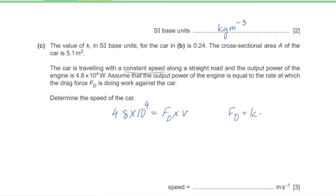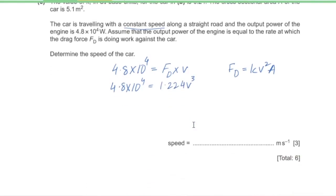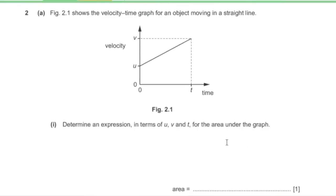Fd equals K times v² times A, so 4.8 × 10⁴ equals 0.24 times 5.1 times v³, giving 1.224v³. Solving, the speed of the car is 34 m/s.